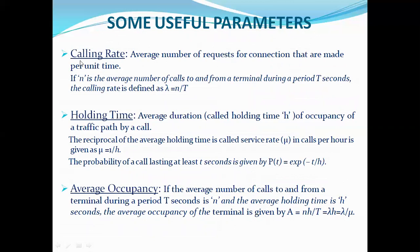Useful parameters: calling rate is the average number of requests for connection made per unit time — the average number of incoming calls per unit time. If you have a time interval T and within this time interval N number of incoming calls arrive, then calling rate — called birth rate — lambda equals N divided by T.